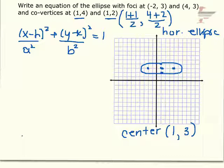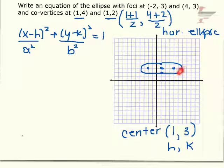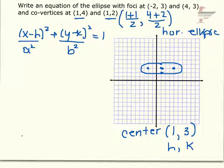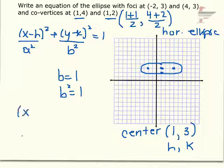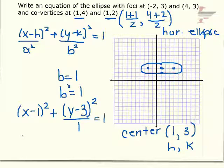Now I need a and b. The co-vertices are in the y direction from center (1, 3): from (1, 3) to (1, 4) is 1 unit, and from (1, 3) to (1, 2) is also 1 unit. So b = 1, hence b² = 1. I now know h = 1, k = 3, and b² = 1. I still need to find a squared since vertices weren't given.